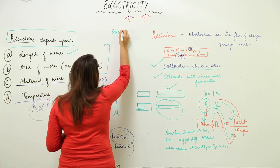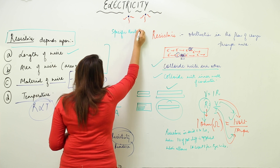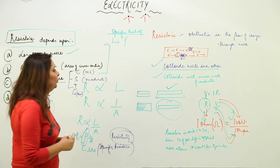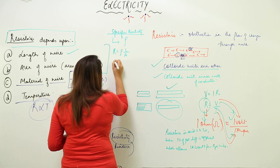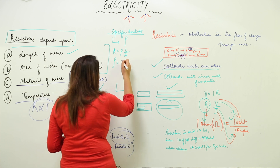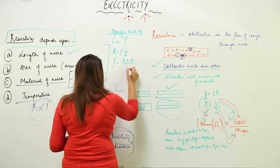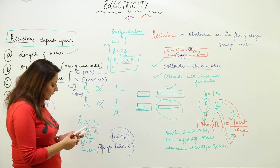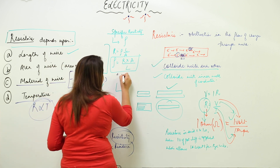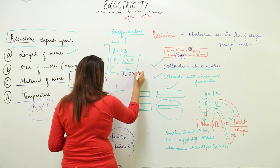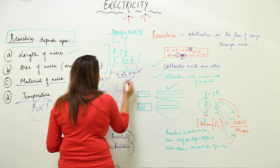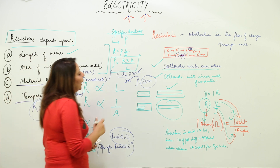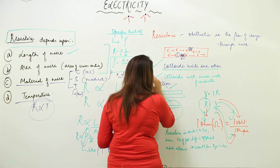For specific resistivity, the formula is derived from R = ρL/A, giving ρ = RA/L. The unit for resistance is ohm and area is m², length is m, so the metres cancel, giving the SI unit of resistivity as ohm·metre. A smaller unit, ohm·centimetre, can also be used.